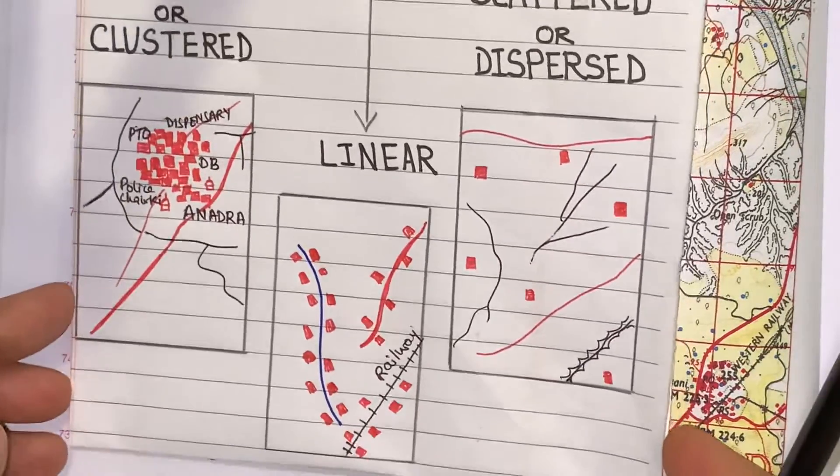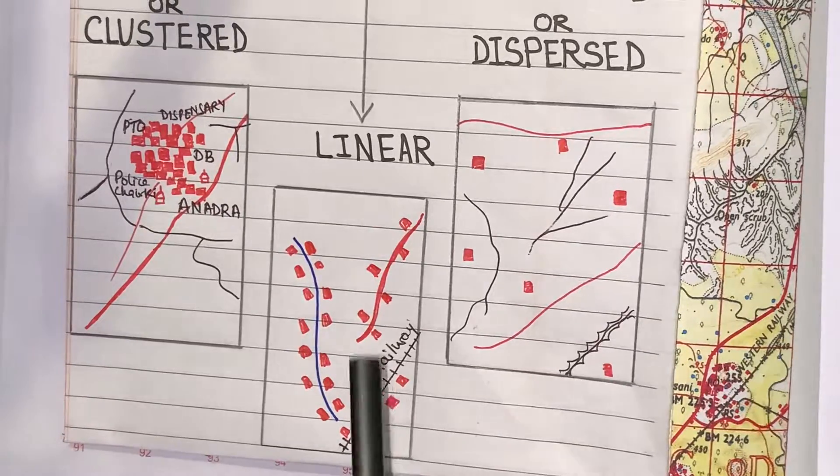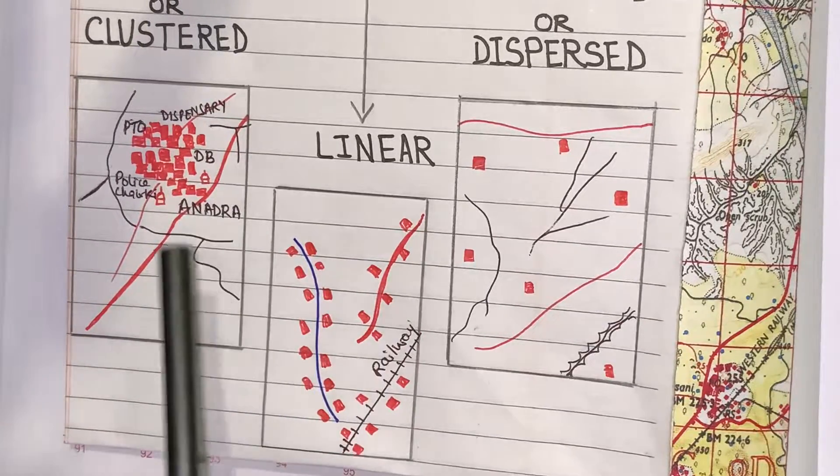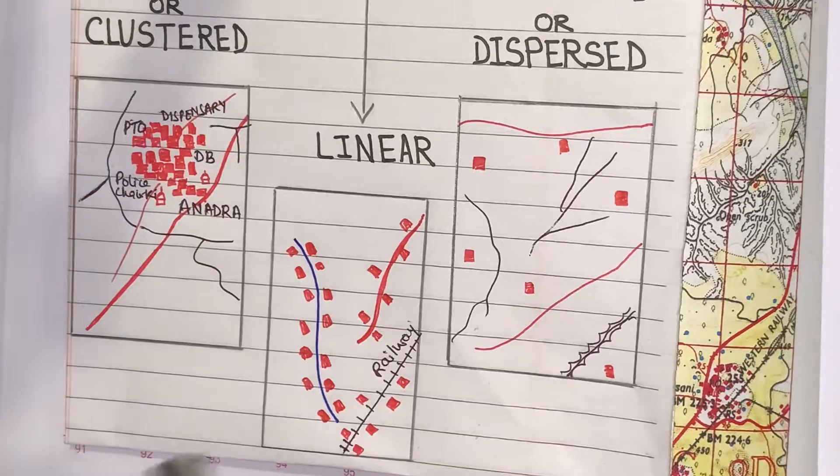Second one, we will see linear. Here, you can see huts are also here, but the design is different from the previous one.